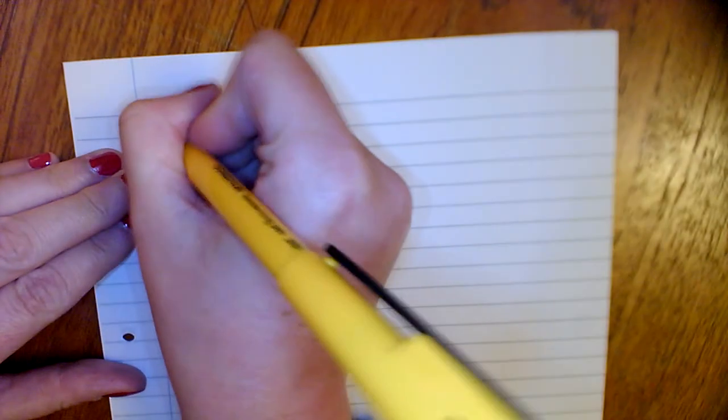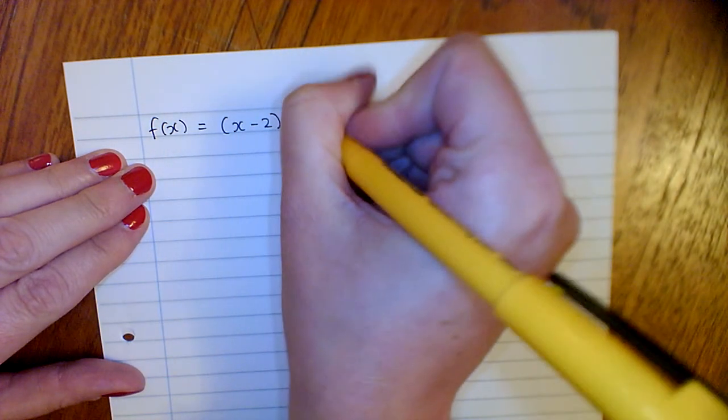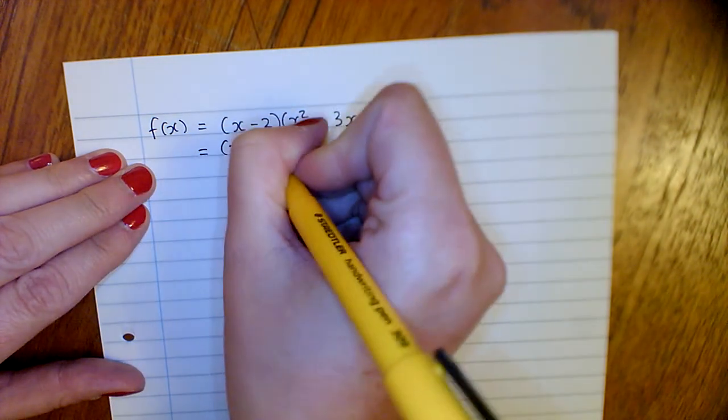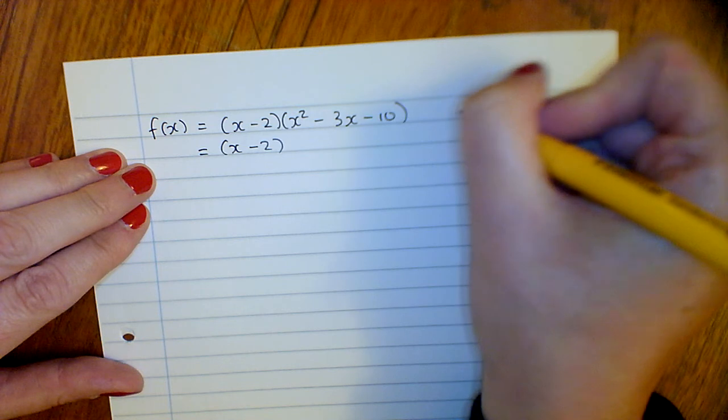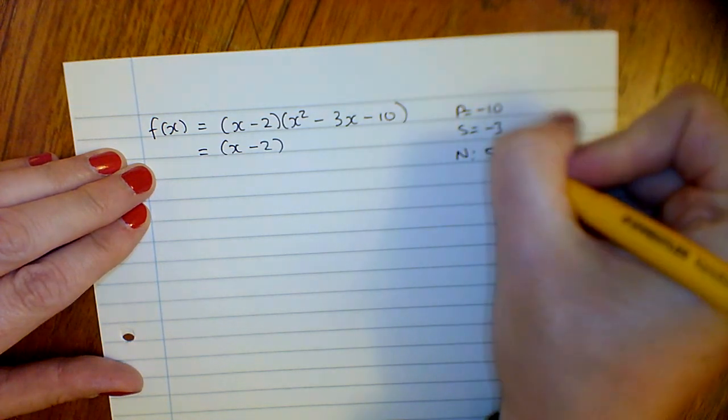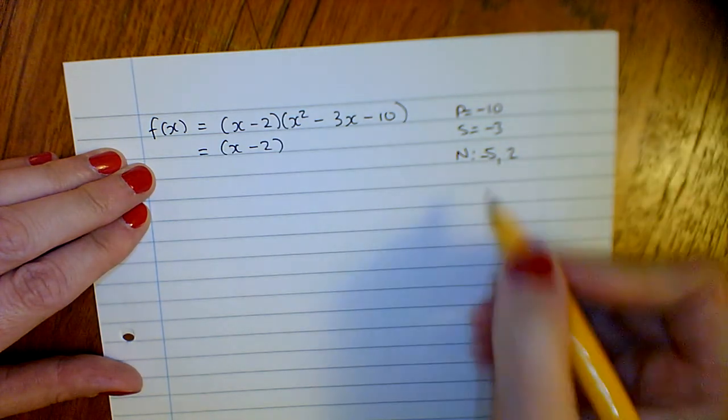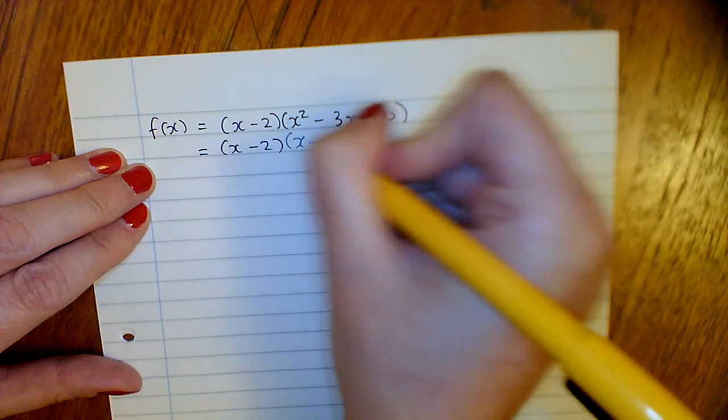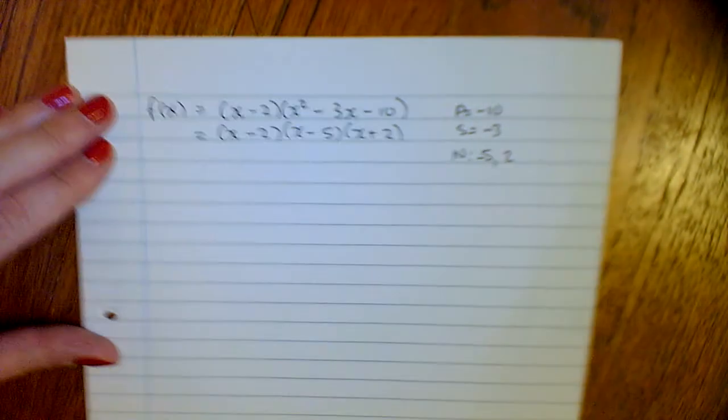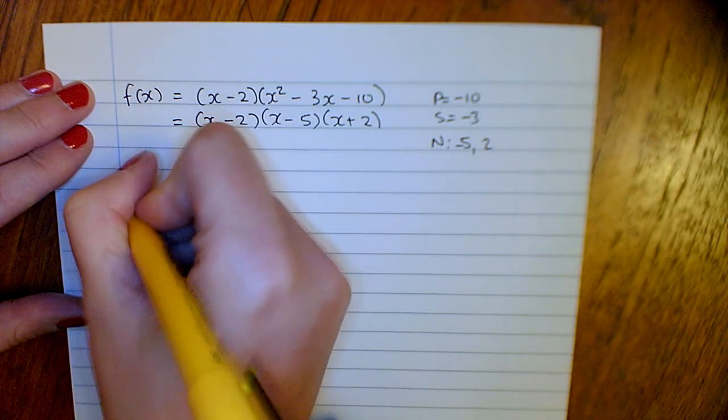We can now write our f of x as x minus 2 upon x squared minus 3x minus 10. So now we've got our quadratic. The product is minus 10, our sum is minus 3, so two numbers that multiply to give minus 10 and add to give minus 3 are minus 5 and 2. So we'll get x minus 5 upon x plus 2. That's the expression factorized fully.